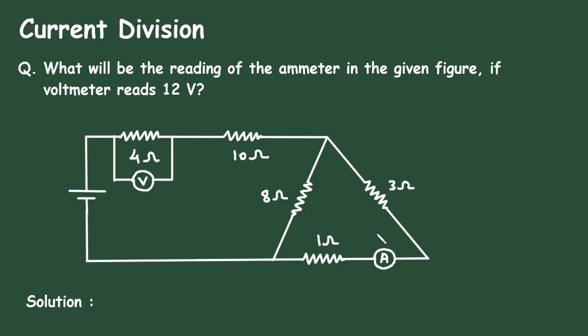So here in this circuit, we have to find the value of this ammeter reading when this voltmeter reads 12 volt. That means the voltage across this 4 ohm is 12 volt. So from this 12 volt,